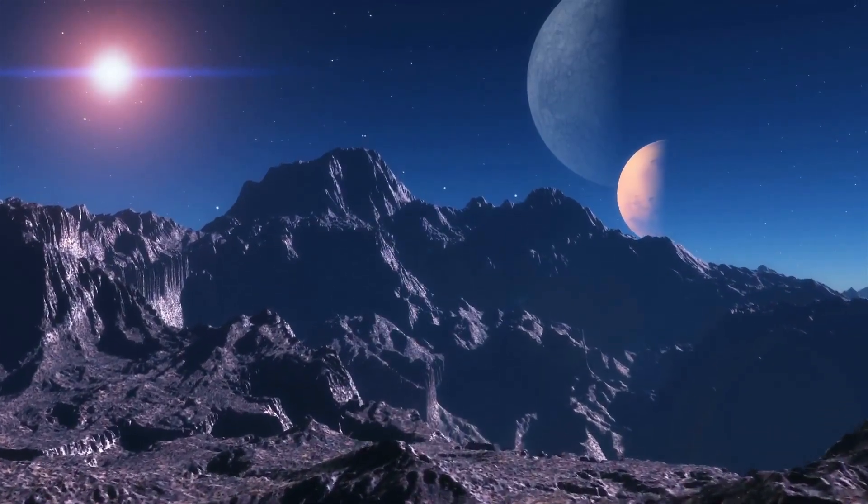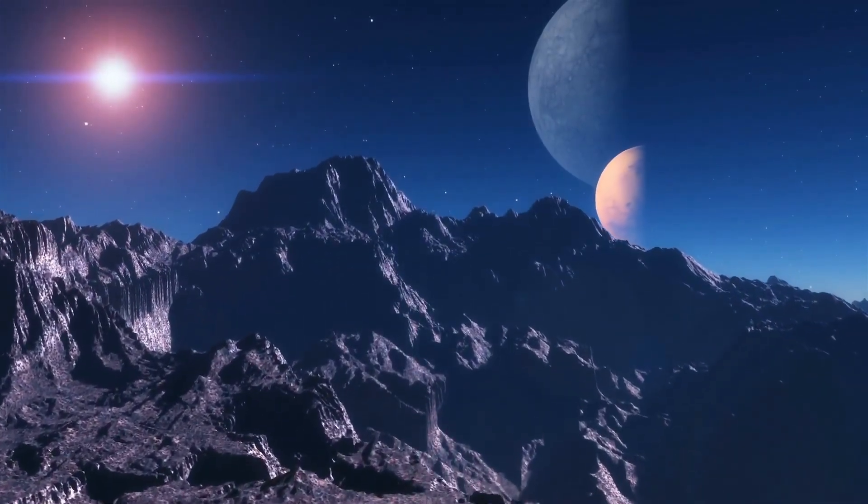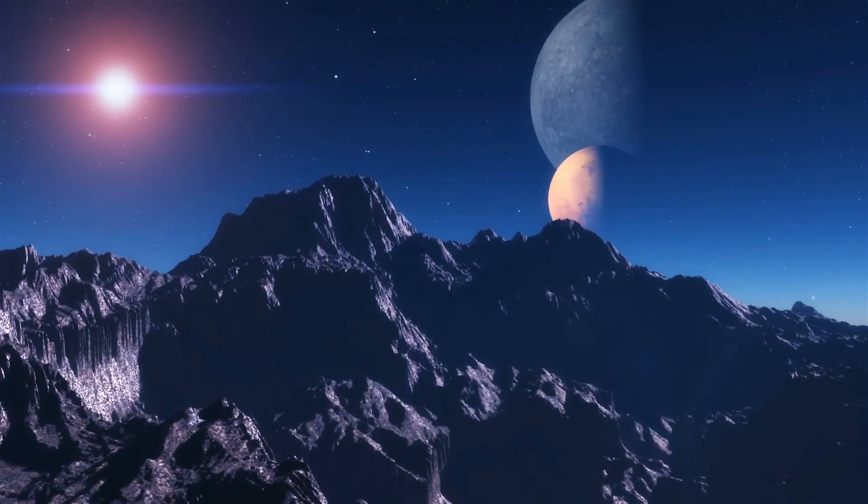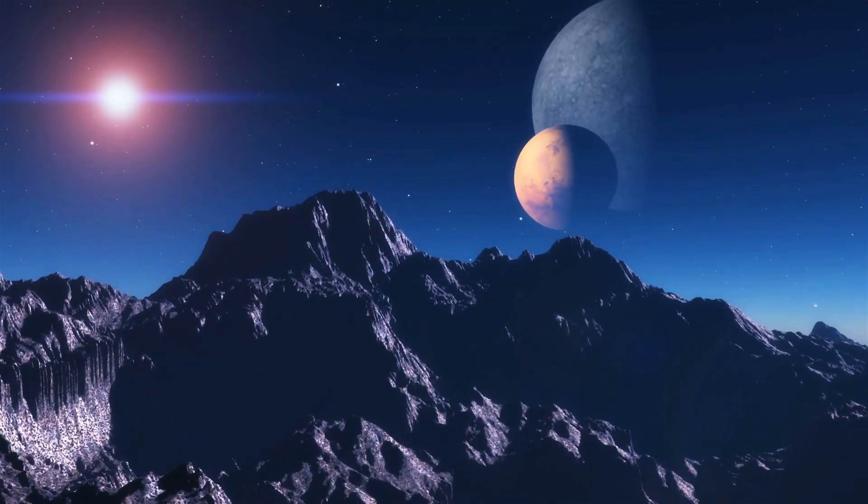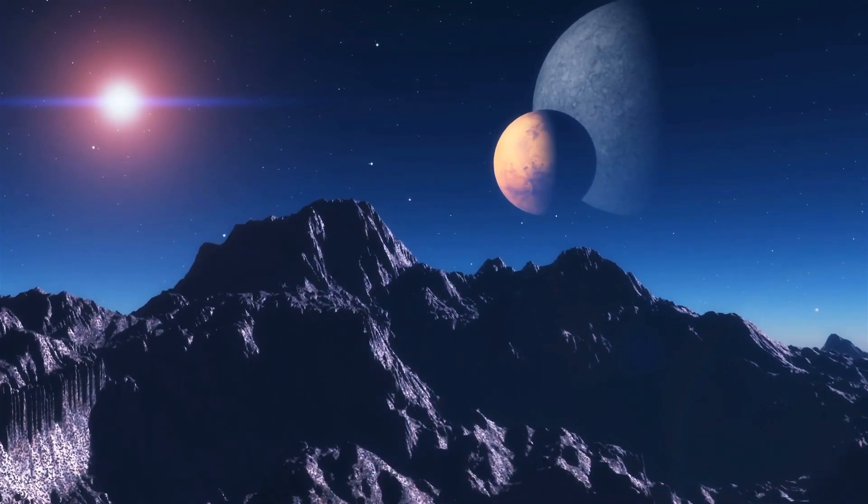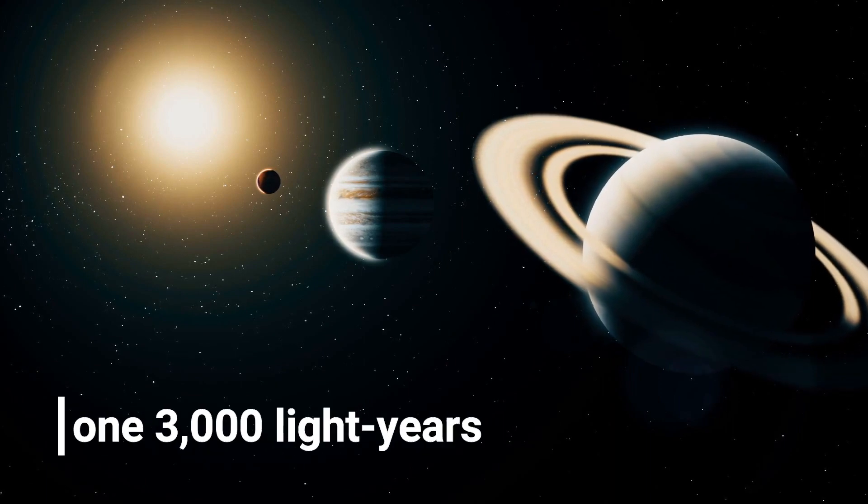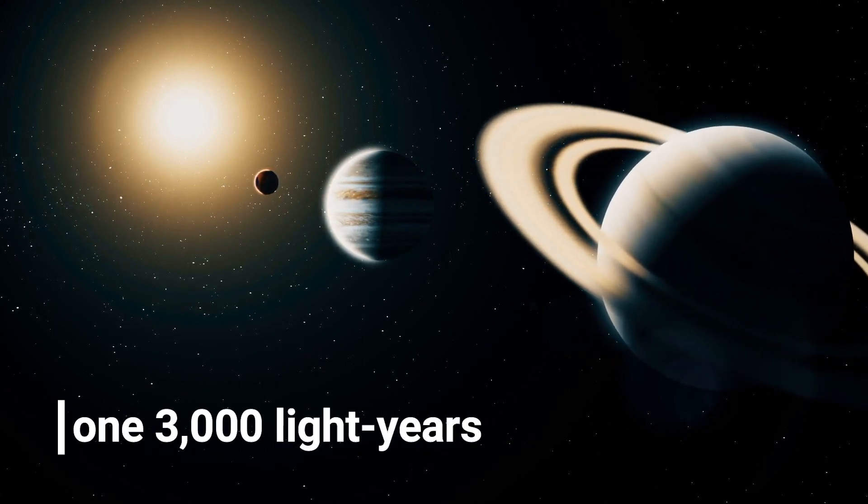Behold, KOI 5715.01. Most of the contenders on our super-habitable planet list aren't ones you could visit anytime soon. They are very, very far away. The top spot is held by one 3,000 light-years away from our solar system.